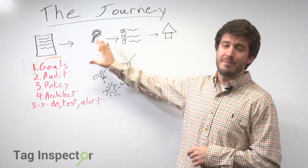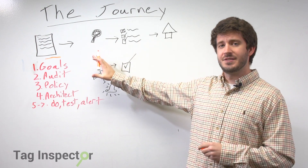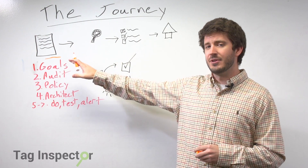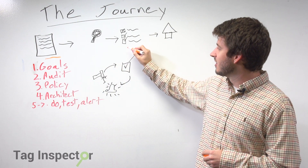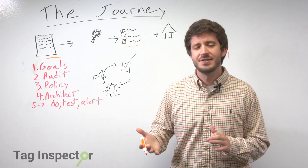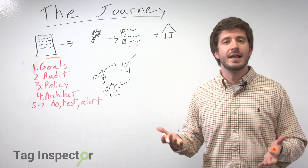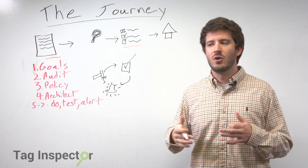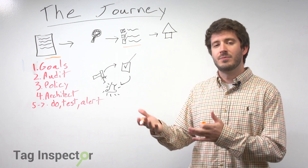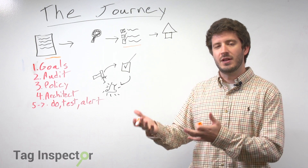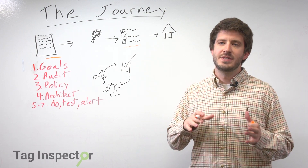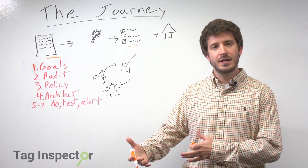Once we know what's happening on the site from our audit and we know what we're wanting to accomplish, we can then get into the stage of our tag policy. The tag policy is a little bit more high level — we're just identifying what tags should be and what platforms should be allowed to be on our website, and what tags are required to be there.